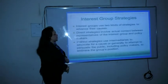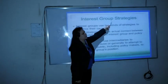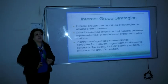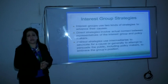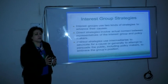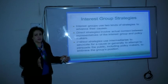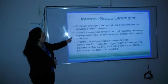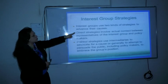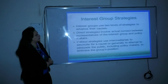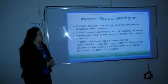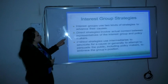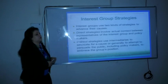The second point is the structures — how interest groups work, how they influence the decision-making process, and what tools and means they use. We can differentiate between two main strategies: direct and indirect. Interest groups use two kinds of structures to advance their causes and interests. The direct structures involve actual contact between representatives of the interest groups and policy makers.